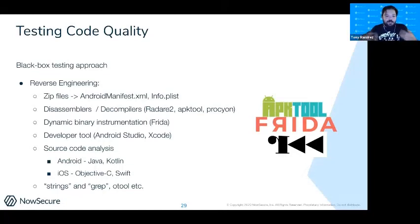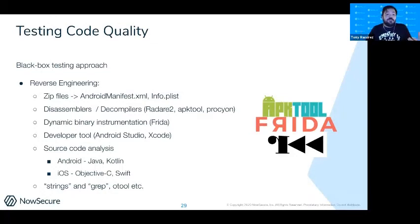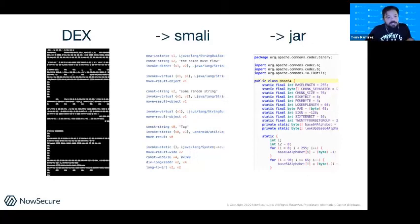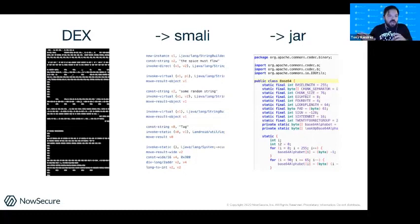Reverse engineering tools like APK Tool, Radare, and Frida are really useful because they give you the ability to do black box analysis. You want to test apps how they run in the real world. On Android, you're usually going from Dex to Smali to JAR — Dex is Android machine code, basically Java byte code being run by a pseudo Java machine on your Android device.